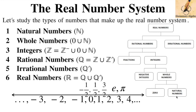We can show this in a diagram. Starting from the bottom: natural numbers. Natural numbers plus zero gives us whole numbers. Whole numbers plus negative integers gives us integers (Z). Integers plus fractions (Z-complement) gives us rational numbers. And finally, rational numbers combined with irrational numbers gives us the real numbers.